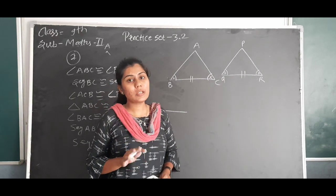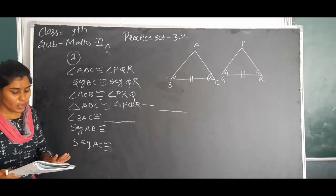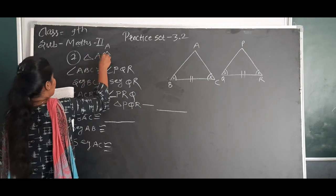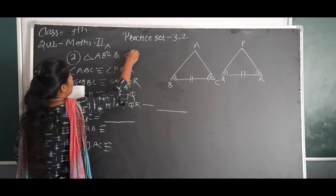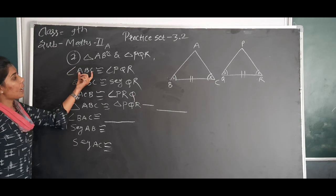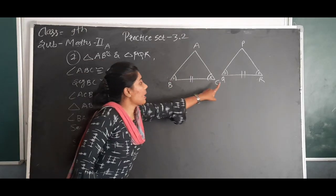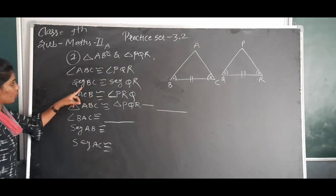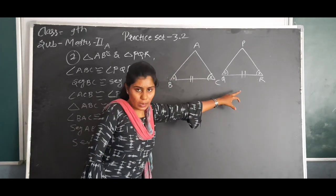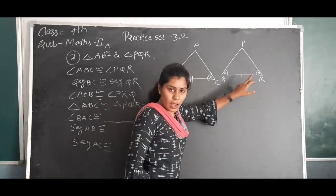Let us solve the first sub-question. From the information shown in the figure, in triangle ABC and triangle PQR: angle ABC is congruent to angle PQR, angle B and angle Q are congruent. Then segment BC is congruent to segment QR. And angle C is congruent to angle R.